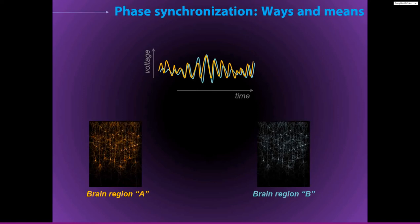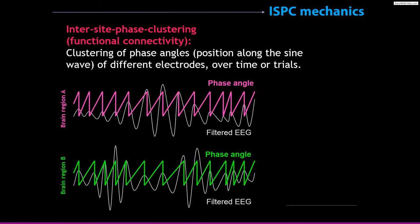This is the motivation for doing phase-locked analyses and frequency-specific connectivity analyses. In fairness, this is not established fact in neuroscience — the idea that synchronization promotes inter-regional communication is a set of theories going back many decades. There's quite a bit of data, but it's still in some pockets of neuroscience a somewhat contentious idea.